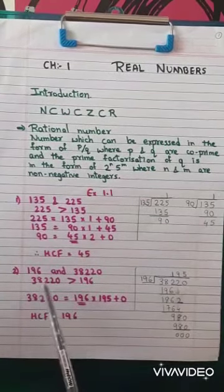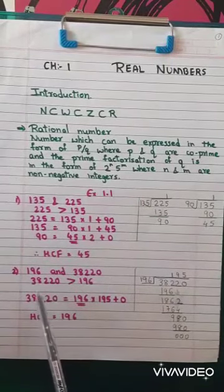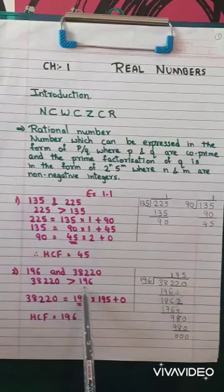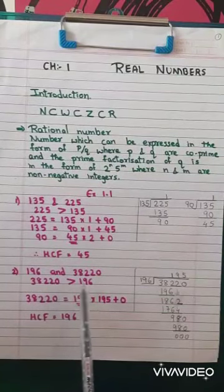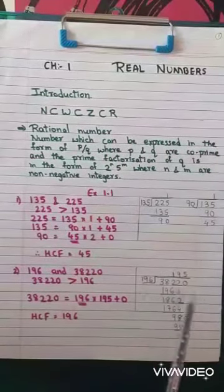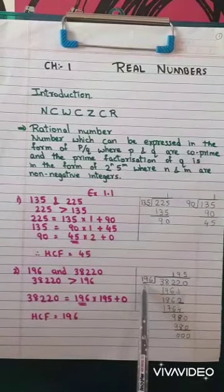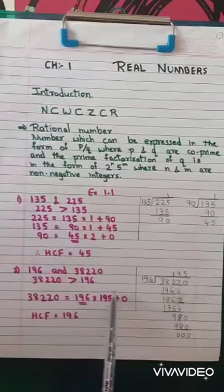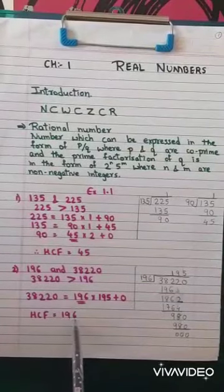Next question: 196 and 38,220. Here 38,220 is greater than 196, so we divide 38,220 by 196. We get 38,220 equals 196 multiplied by 195 plus 0. Directly in the first step we get remainder 0, so HCF is 196.